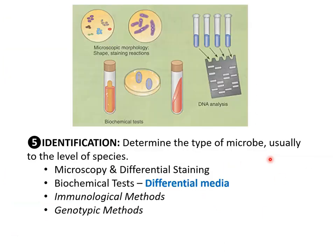The last step is going to be identification, which is going to determine what type of microbe it is, usually to the level of a species. We've already learned about microscopy and differential staining — the gram stain is really that first step in classifying a bacterium. We also talked about the acid-fast stain, which could identify mycobacterium. Moving forward, we're going to talk about biochemical tests and differential media, where there's a color change based on the capabilities of a microorganism to alter a certain ingredient in that media. In unit two, we're going to look at immunological methods and genotypic methods for identification — so looking at the DNA of the organism.